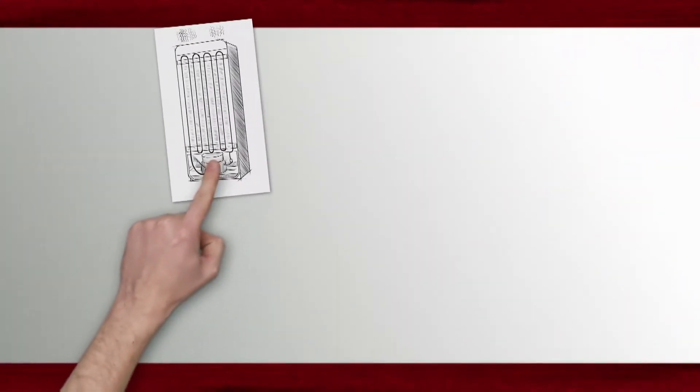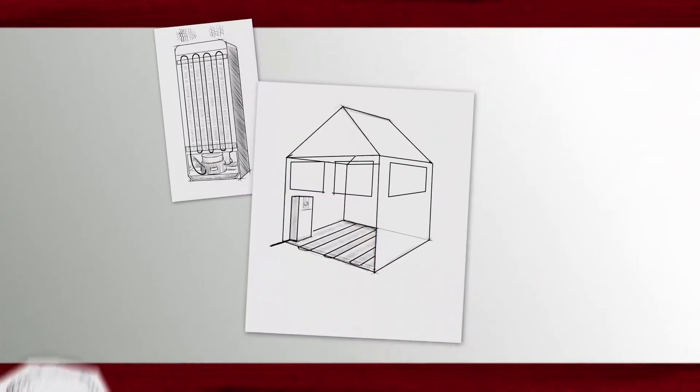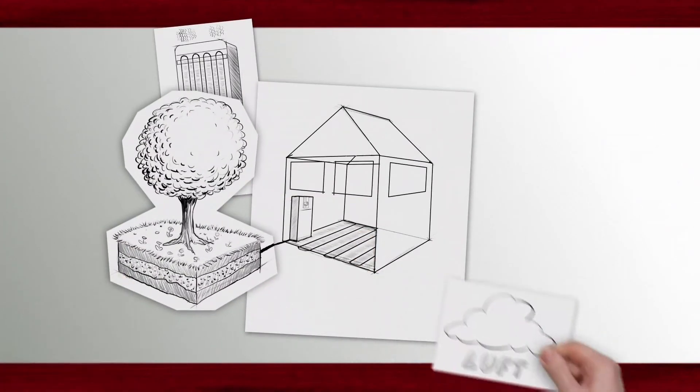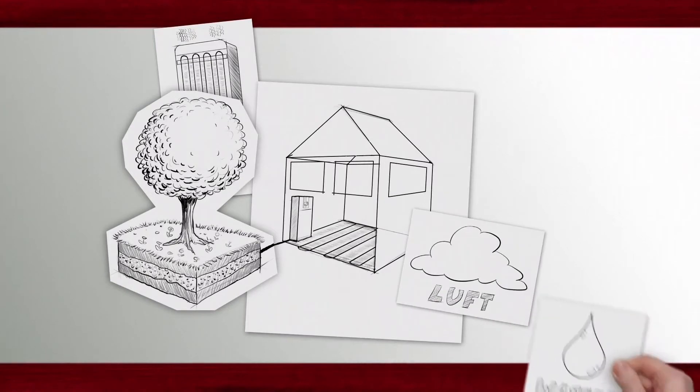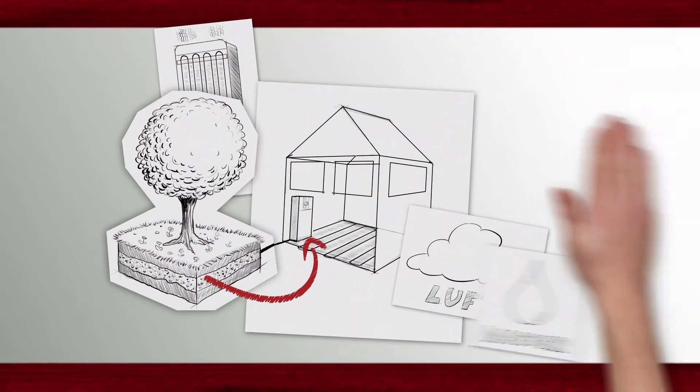Now imagine that the heat exchanger is underfloor heating and the heat pump removes stored solar energy from the soil, the air or the groundwater and transmits it to the heating system in the house. So quite simple.